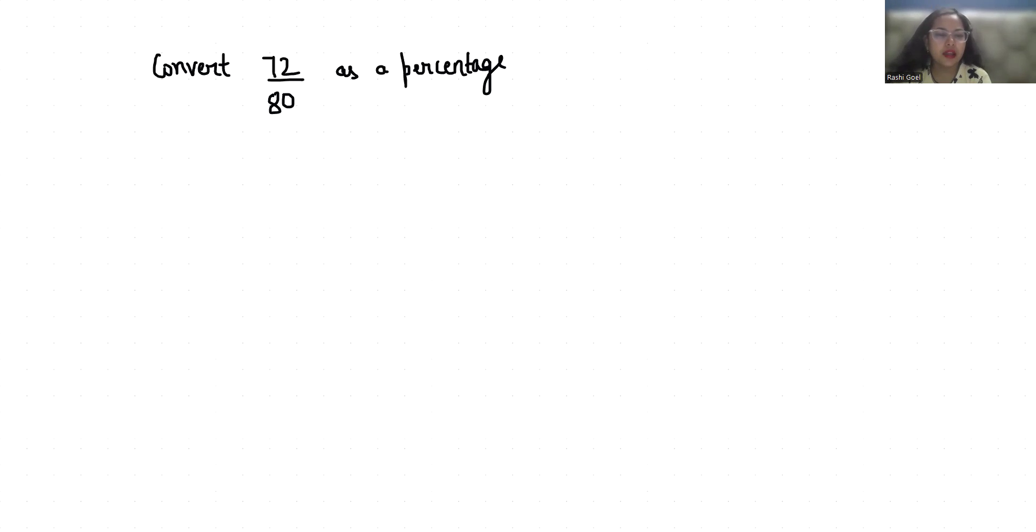So 72 by 80. Now first I'm going to reduce this fraction by dividing both numerator and denominator by 2. So it gives us 36 and 40. You can reduce it more by dividing it by 2 again. It gives us 18 and 20.